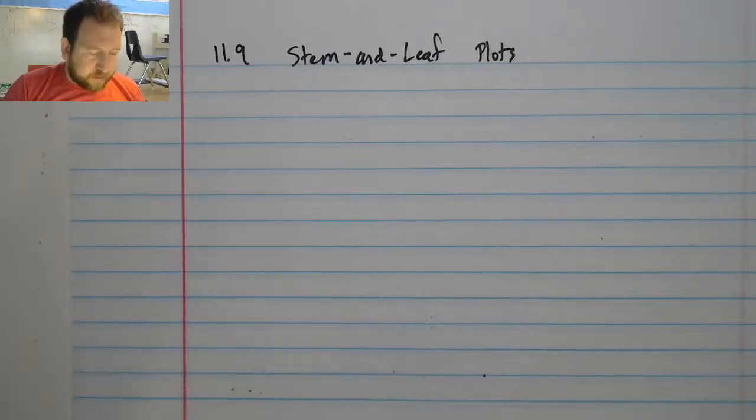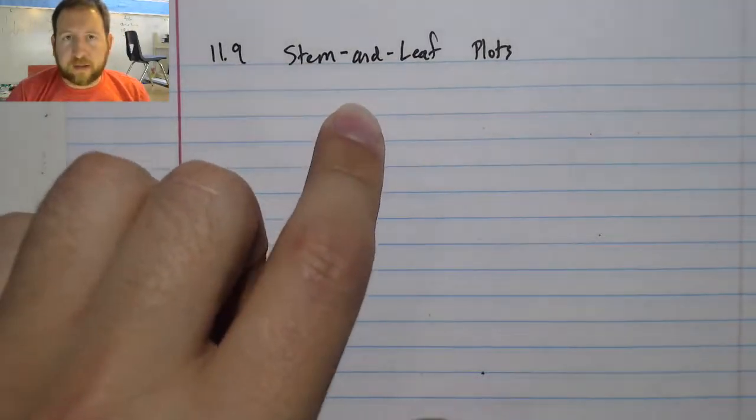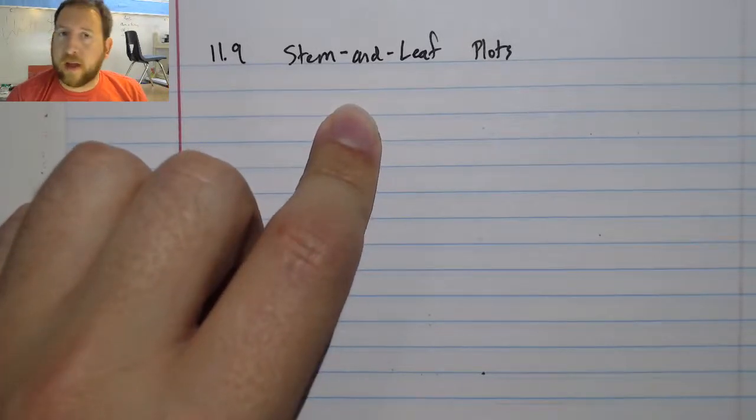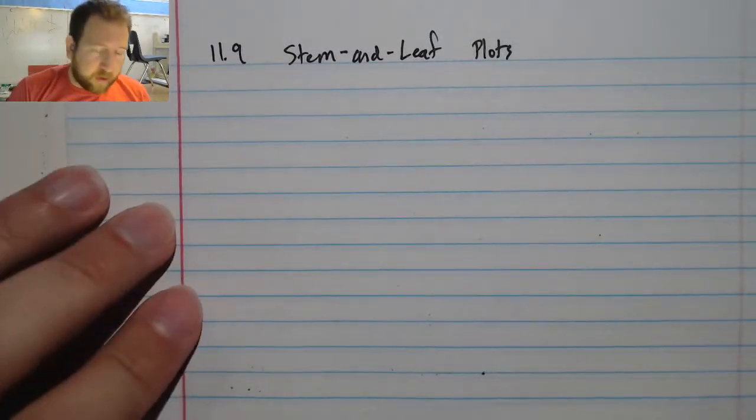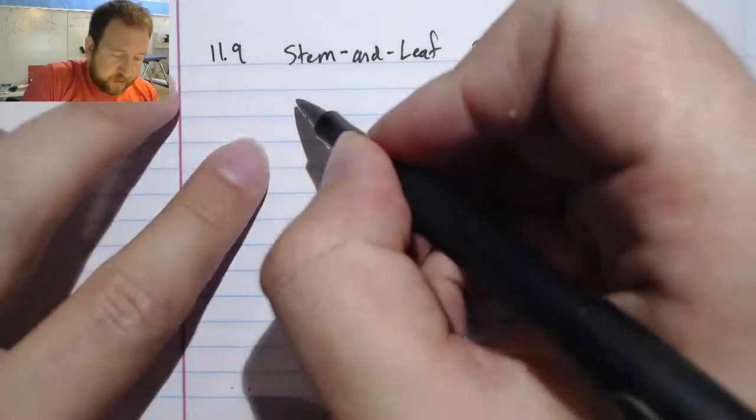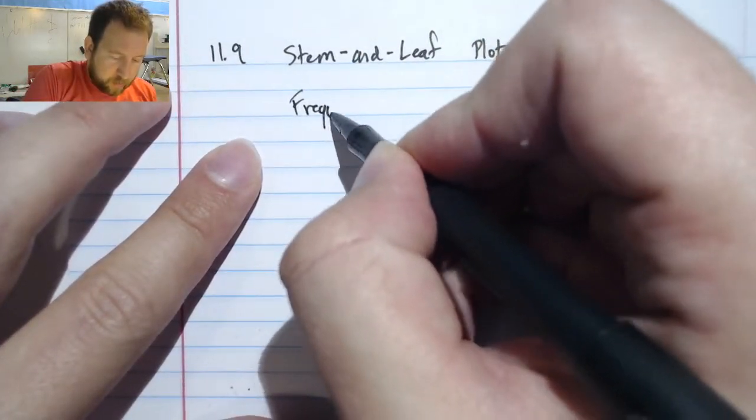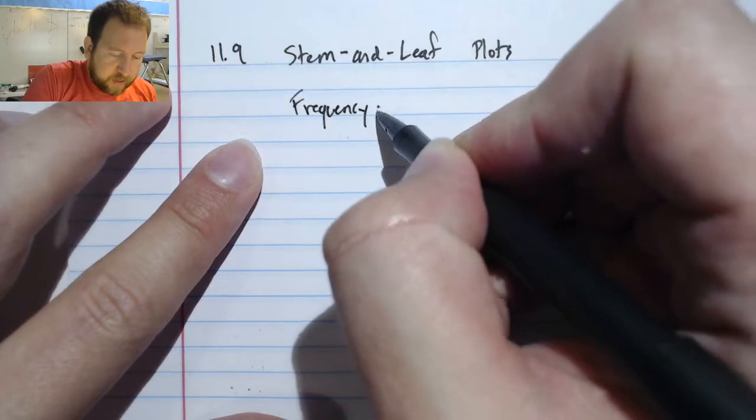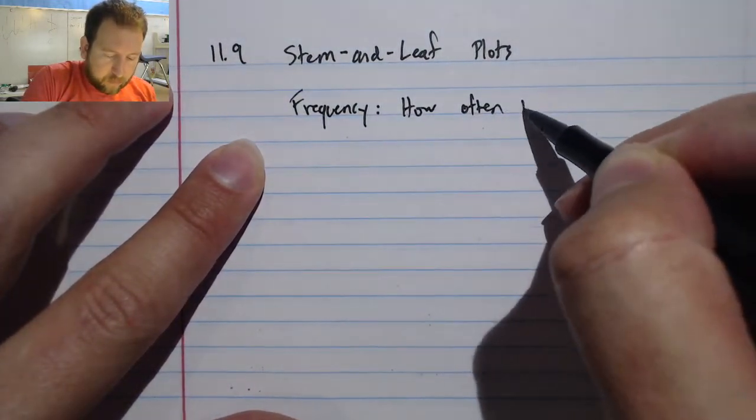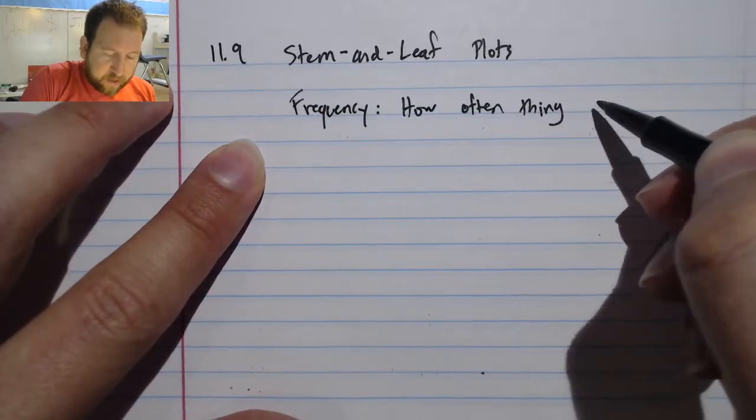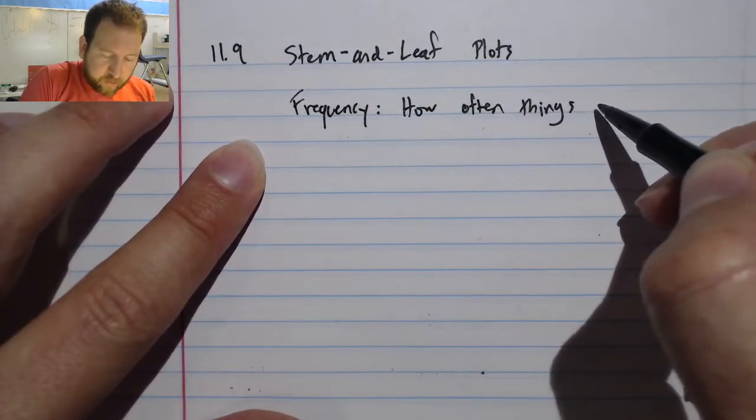All right, I want to talk about section 11.9 stem-and-leaf plots. This is a different way to sort data and look at it. Instead of looking at changes over time, we are going to look at frequency. And frequency is how often things happen.